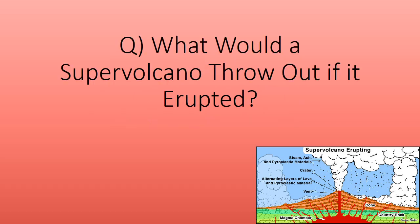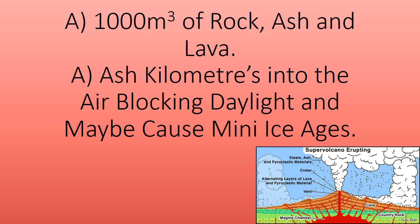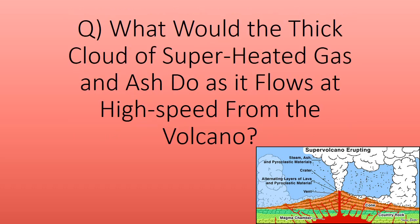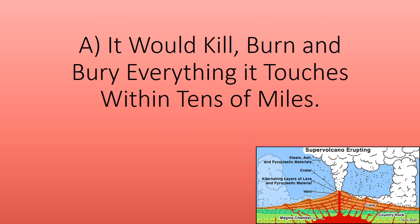What would a supervolcano throw out if it erupted? A thousand cubic kilometres of rock, ash, and lava. Ash kilometres into the air, blocking daylight and possibly causing ice ages. The thick cloud of superheated gas and ash would kill, burn, and bury everything it touches within tens of miles.